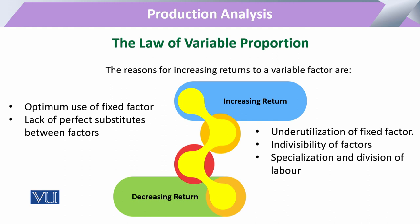When we talk about increasing returns, there is a possibility that fixed factors were underutilized, and now with this combination of inputs, they are better utilized. It is also possible that certain factors have indivisibility, so adding one or two more variable units adds up effectively. Another reason for increasing returns to scale is that there can be certain specialization or division of labor that provides the opportunity for increasing returns.